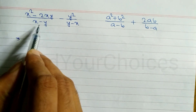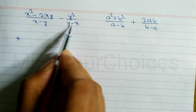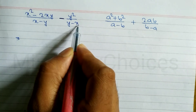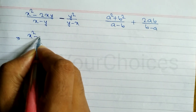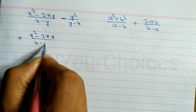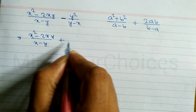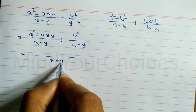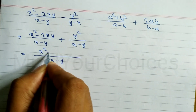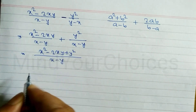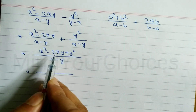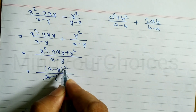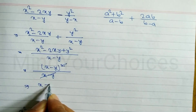Here one denominator is (x-y) but the other is (y-x) — they are not the same. As discussed previously, we change the sign: in place of minus we write plus, and interchange the terms. So we write x²-2xy over (x-y), change minus to plus, and write (x-y). Taking LCM as (x-y), the numerator becomes x²-2xy+y². Using the formula a²-2ab+b² = (a-b)², we get (x-y)² divided by (x-y). The square cancels and the answer is (x-y).